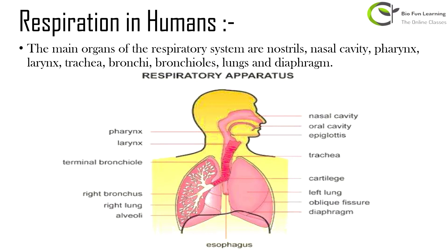Now let's study respiration in humans. The main organs of the human respiratory system are: nostrils, nasal cavity, pharynx, larynx, trachea, bronchi, bronchioles, lungs, and diaphragm. Air enters through the nasal cavity, which has hair and mucus to filter the air before it enters the windpipe. The throat contains the pharynx, larynx, and trachea. The trachea is made of C-shaped cartilage so that the membrane does not collapse when air moves in and out.